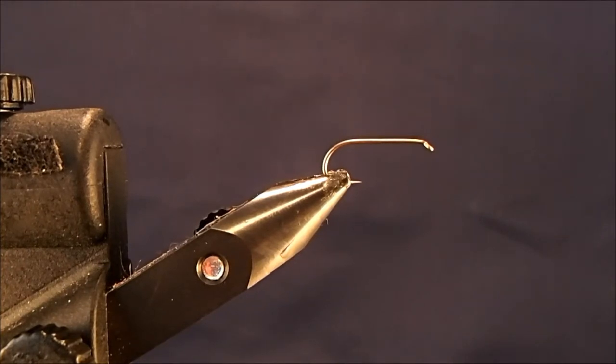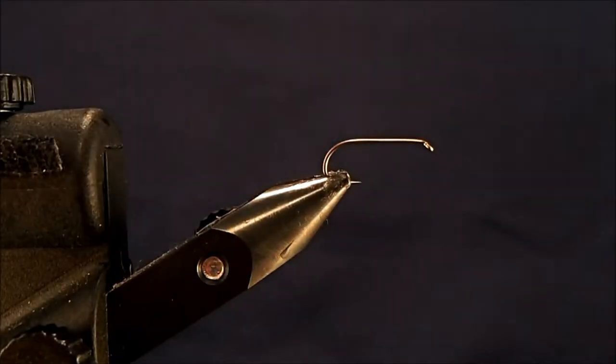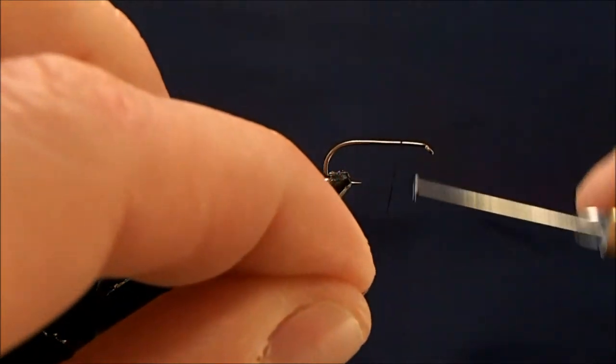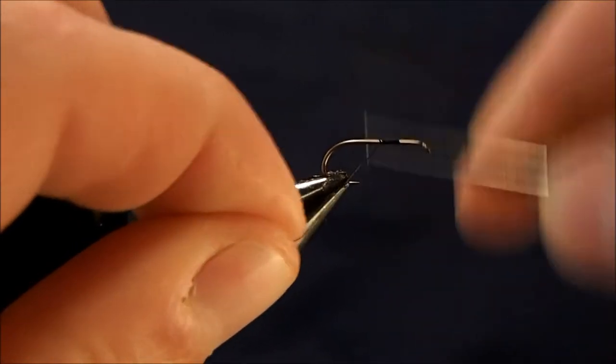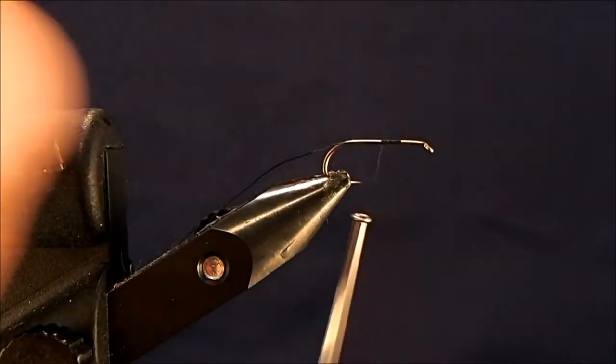This fly is a Griffith's Gnat and I'm going to start off with a size 10 dry fly hook. I'm just going to begin to wrap my 8/0 black thread onto it.